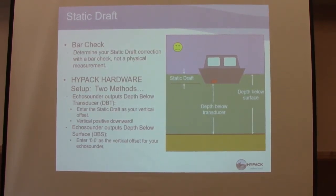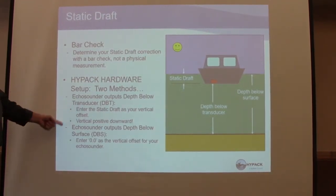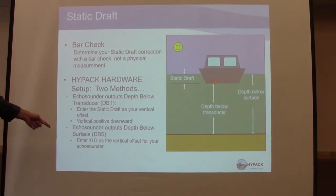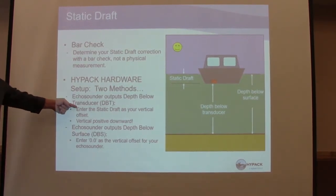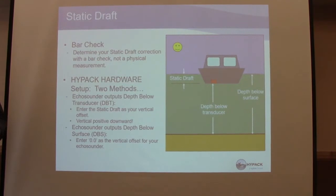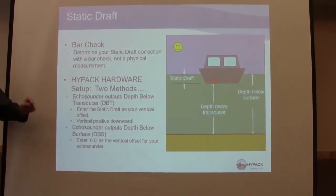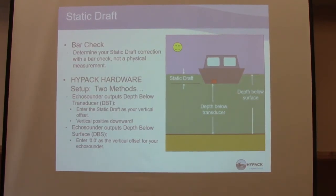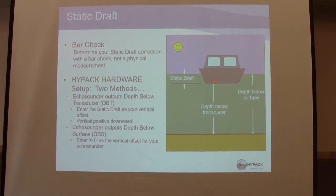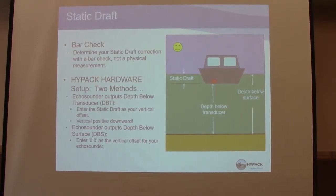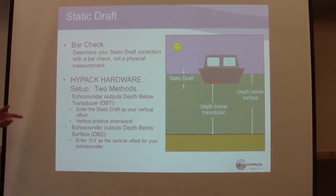We do our bar check — we put the bar down below the water. The bar check doesn't just do a draft correction; it's used to adjust draft at five feet and address sound velocity at depth. Echo sounder outputs depth below transducer or depth below surface. If you do depth below transducer, you have to enter a vertical offset from the sonar to the waterline. Most people have all that input into the sonar and are doing depth below surface. The bar check is usually measured to the waterline because you can't see the transducer face.